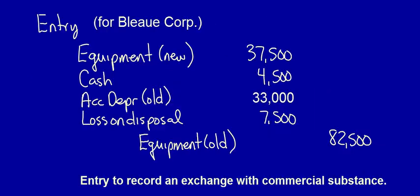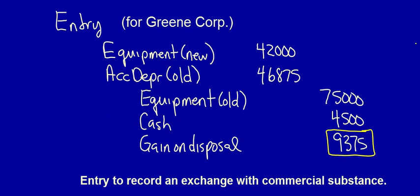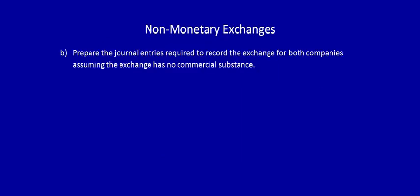So here we see the entry that Blue Corporation would have to make in order to record the exchange. Notice that Blue Corporation records a loss on disposal. Both corporations do not have to make the exact same entry — one corporation will not know the information such as the accumulated depreciation and the original cost of the other's equipment. Each corporation will make their own entry based on the information available to them. Notice Green Corporation records a gain on disposal. We'll move on to exchanges without commercial substance in our next video.